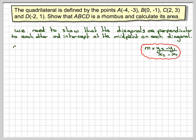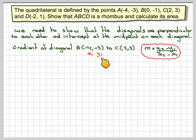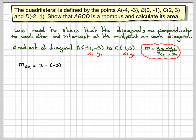The diagonal AC goes from A(−4, −3) to C(2, 3). We'll call A: X1, Y1 and C: X2, Y2. Using the gradient formula, MAC = (3 − (−3)) / (2 − (−4)) = 6 / 6 = 1.